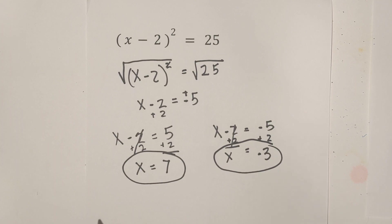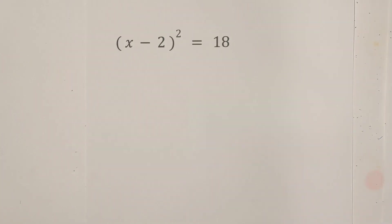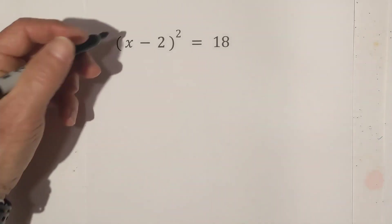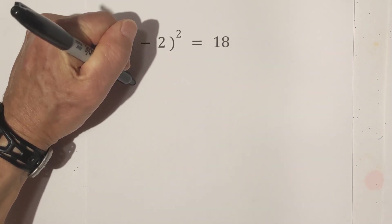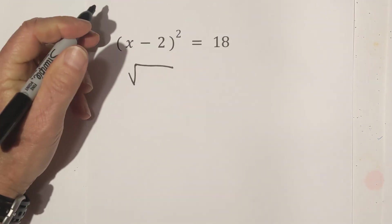Let's work another example. Now in this example, 18 is not a perfect square. So we'll have to add a couple steps. So we first need to get rid of the square.